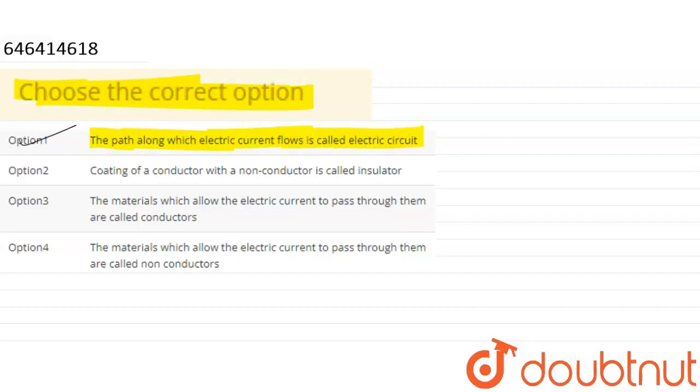This is current flow. Let us see how we create this circuit. This will glow. This current flow will happen when it passes the current. So this is an electric circuit. The first option is correct.